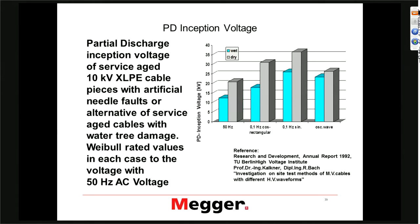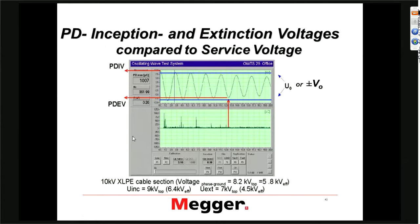PD testing at power frequency is today very common, but also PD testing at 0.1 Hz — there is nothing wrong with 0.1 Hz PD testing. However, results might be different when looking at splices and terminations, because the inception voltage might be higher than at operating voltage. When you go to power frequency, these issues can be avoided. Our recommendation is to do partial discharge testing at power frequency.